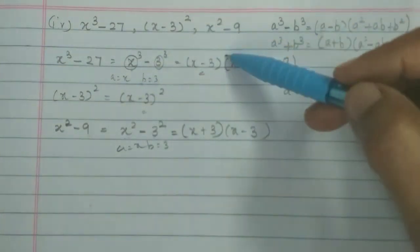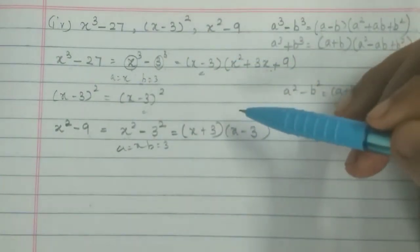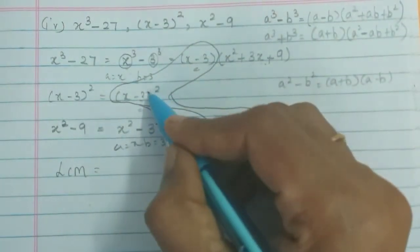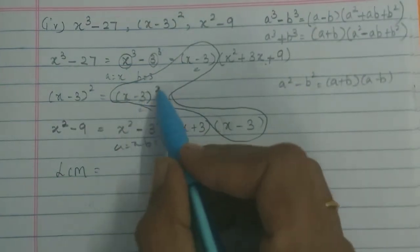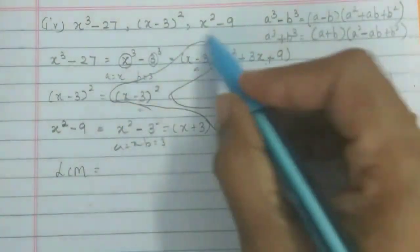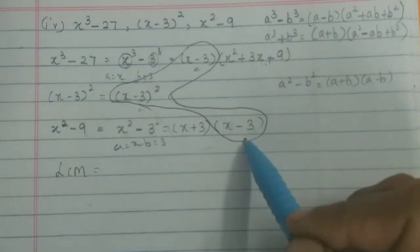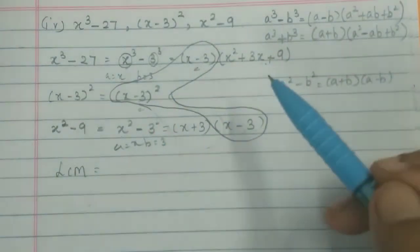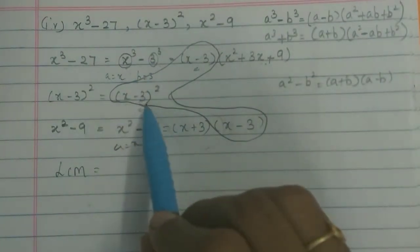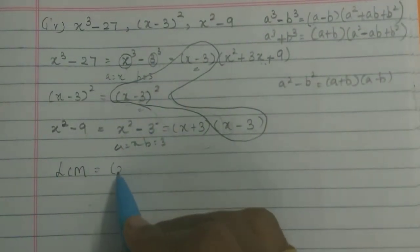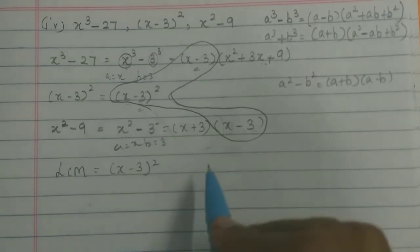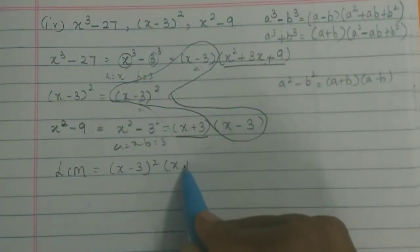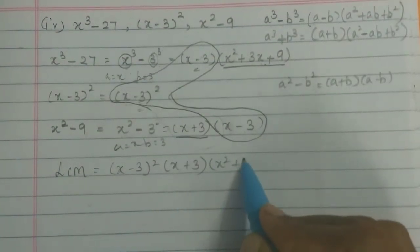Now we find the LCM. The common factor across all three expressions is (x-3). We take (x-3)² from the second expression. Then (x²+3x+9) from the first, and (x+3) from the third. So LCM = (x-3)²(x+3)(x²+3x+9).